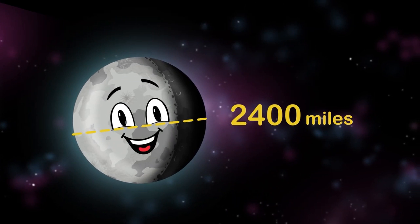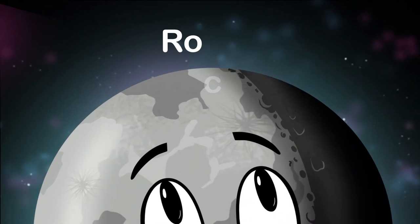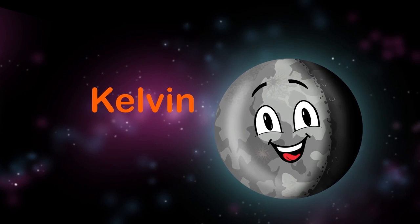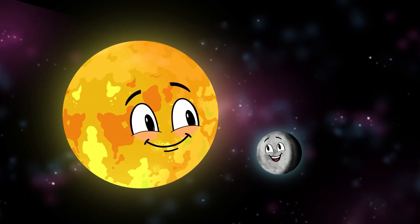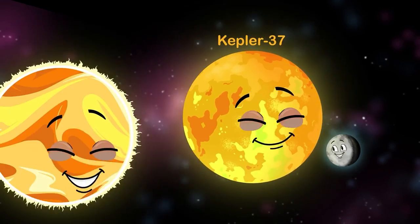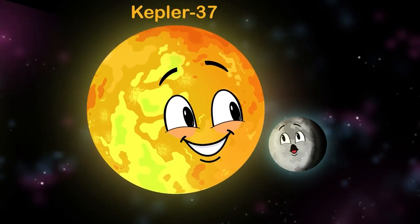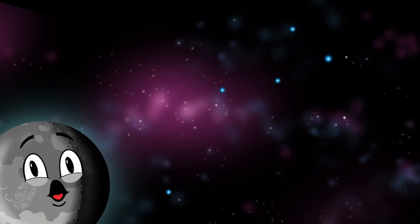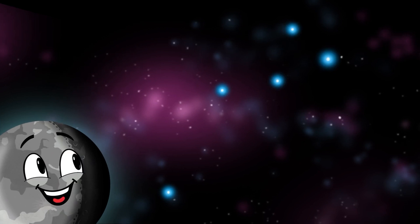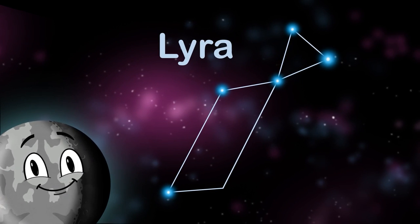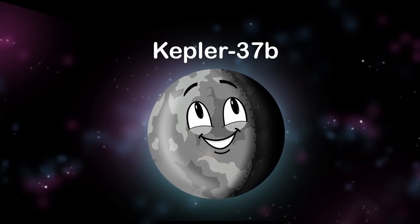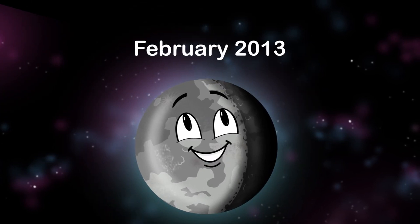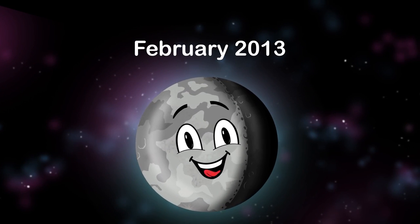I have a diameter of 2,400 miles. I'm likely a rocky planet with a solid surface. I have a surface temperature around 700 Kelvin. I orbit my G star called Kepler-37, similar to your sun. I orbit my parent star at 9.3 million miles away with an orbital period every 13 days. If you're looking for me in the dark of the night sky, you can find me in the constellation Lyra.